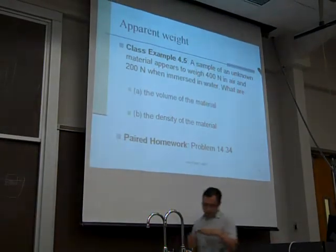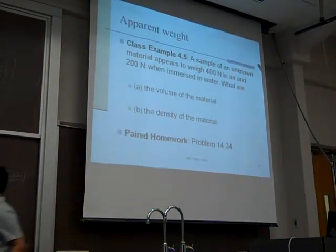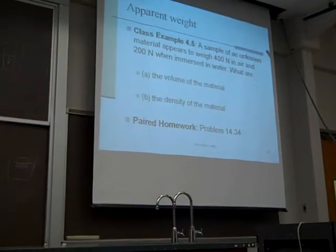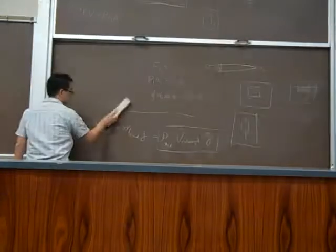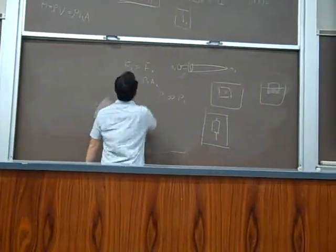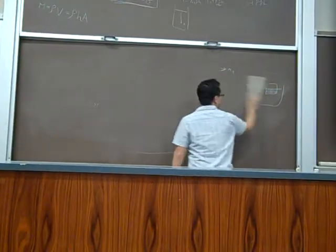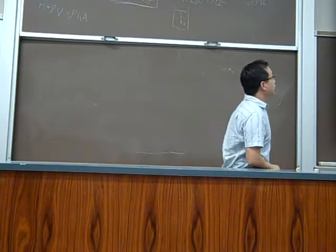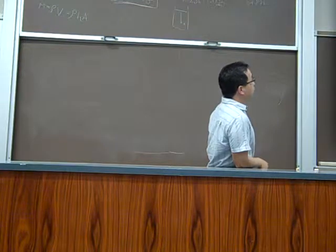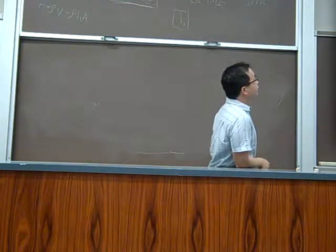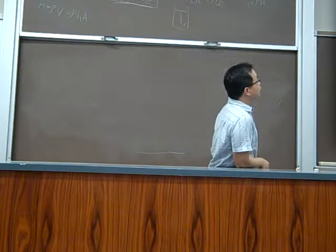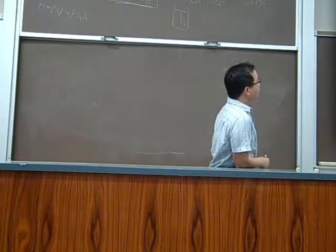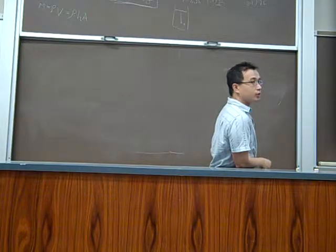Here we have a problem about apparent weight. Let's look at it. A sample of unknown material appears to weigh 400 in air and 200 when immersed in water. What is the volume of the material and what is the density of the material?